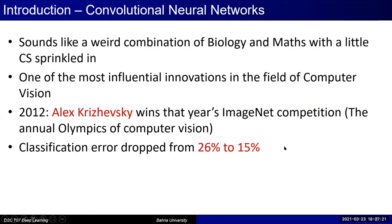If you are not familiar with CNN, whenever you hear this terminology for the first time, it seems like convolutional neural networks have some concepts from biology, math, stats, and computer science, and so on — which is true to some extent. CNNs have been the most influential innovation in the field of computer vision.